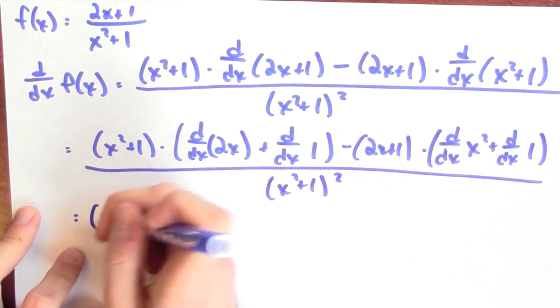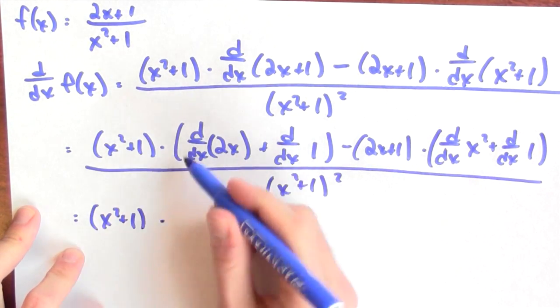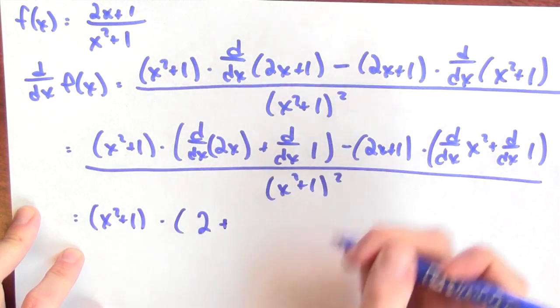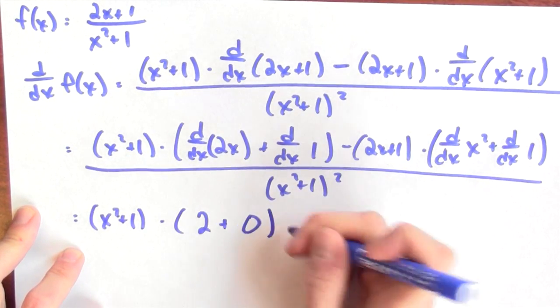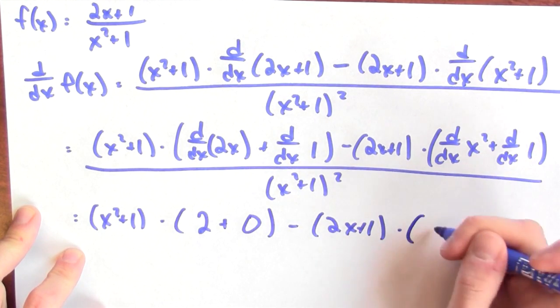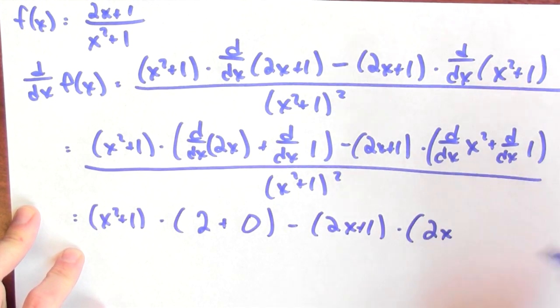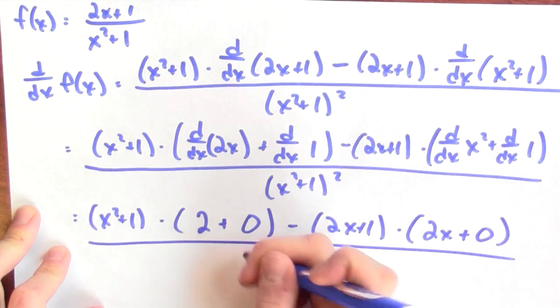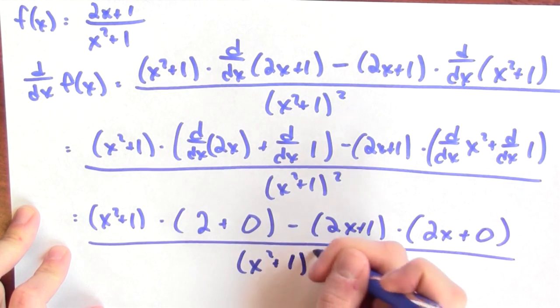I can keep going. I've got x squared plus 1 times, what's the derivative of 2x? It's just 2. What's the derivative of this constant? 0. Minus 2x plus 1 times, what's the derivative of x squared? It's 2x. And what's the derivative of 1? It's the derivative of a constant, 0, all divided by x squared plus 1 squared.